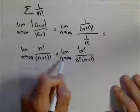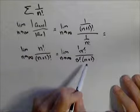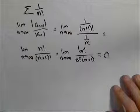And so basically, I've got the limit as n goes to infinity of one over n plus one. That equals zero.